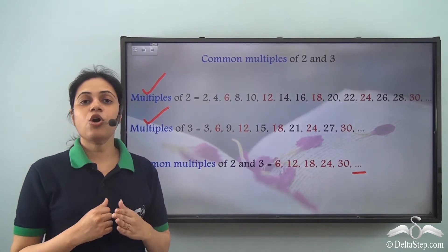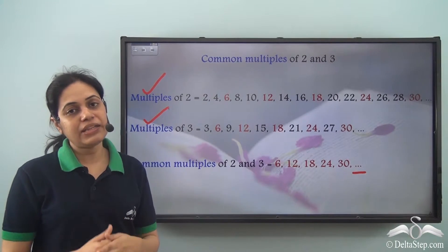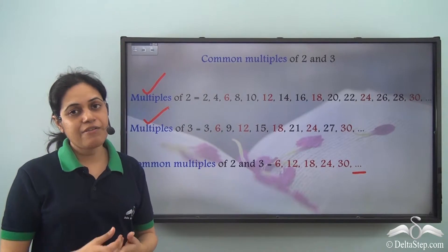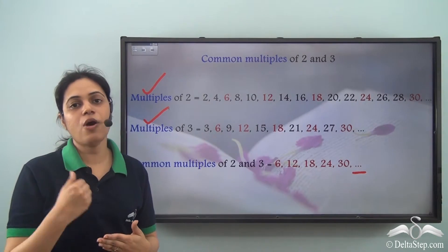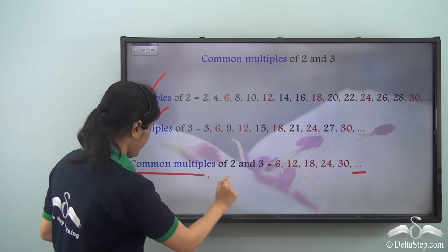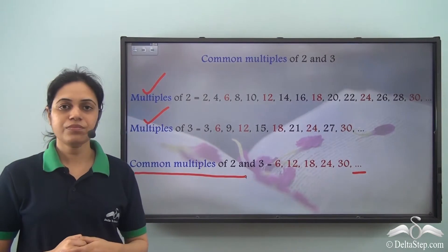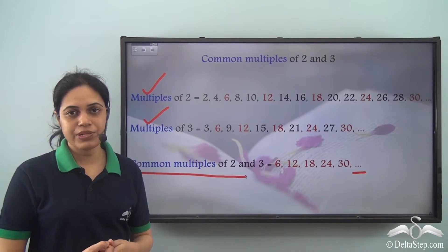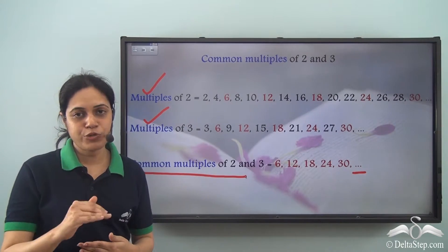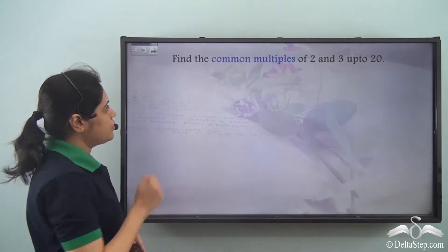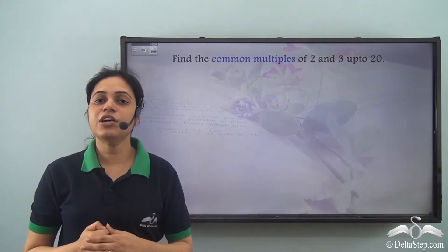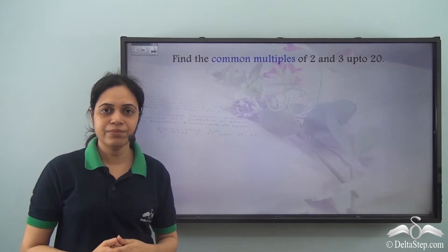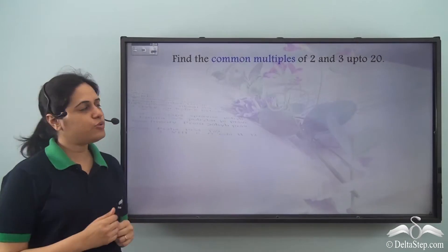So the common multiples of 2 and 3 are also endless. We cannot stop at 30; we can have higher and higher common multiples. That is why when we find common multiples, we find them up to a given number. Suppose we need to find the common multiples of 2 and 3 up to 20 — how can I do that?